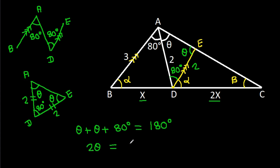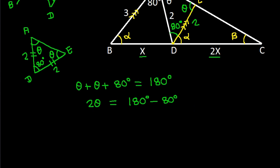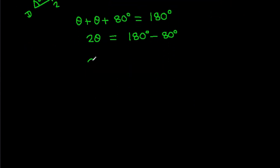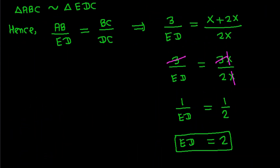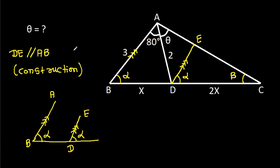So, 2 theta equals 180 degrees minus 80 degrees, which gives 2 theta equals 100 degrees. Therefore, theta equals 100 over 2, which is 50 degrees. We get theta is 50 degrees.